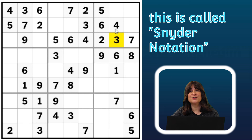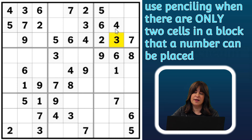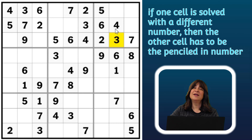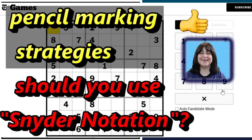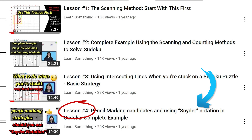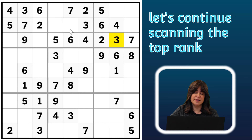By the way, this is called Snyder notation — when you pencil in numbers into a block where it can only go into two and only two cells. That way, if you solve one of those cells, then the other cell has to be the penciled-in number. If you're not familiar with Snyder notation, take a look at my tutorial on pencil marking — it's Lesson 4, and I'll leave a link in the description box. Back to the grid — we just placed the number seven, so moving on to the number eight.